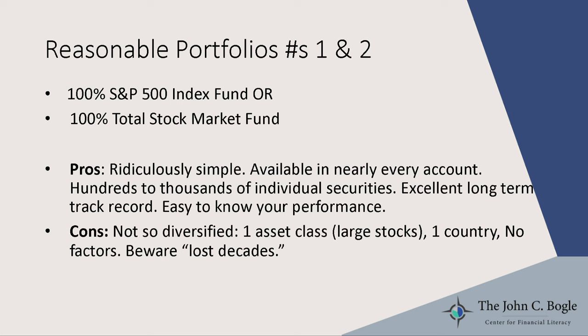The first reasonable portfolio: putting all your money into the S&P 500 index fund or the total stock market index fund. The pros are that it's very simple — you only have to remember one thing, and that fund is available in every retirement account. There are hundreds or thousands of individual securities, a great track record, and it's easy to know your performance. The downside: it's really only one asset class — large U.S. stocks, only one country, no factor investing — and if you end up with a lost decade like the 2000s, you may not be happy with returns.